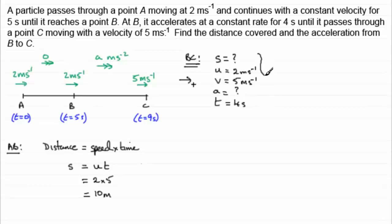So what am I going to use then to find out what S is, the displacement from B to C? Well, it's obviously got to be S equals U plus V times the time divided by 2. It's the only equation of the SUVAT equations that doesn't have A in. So we picked that one.